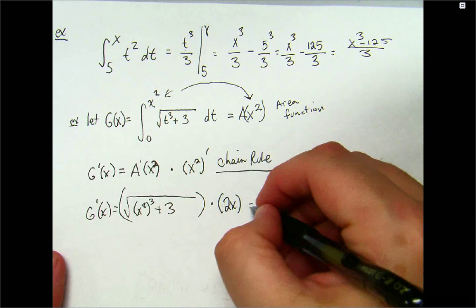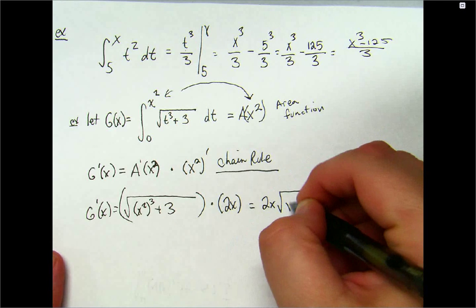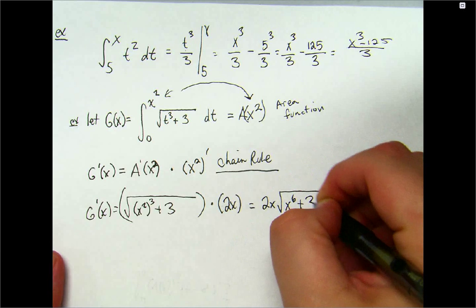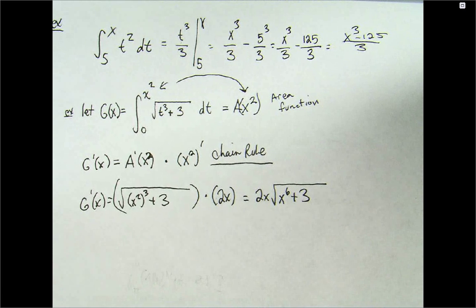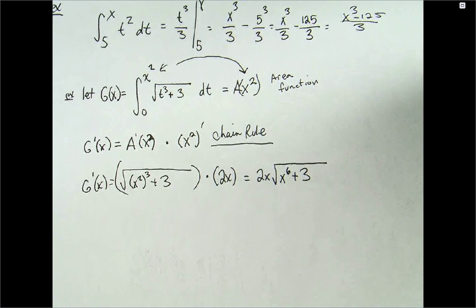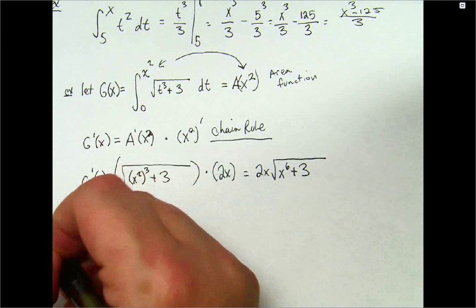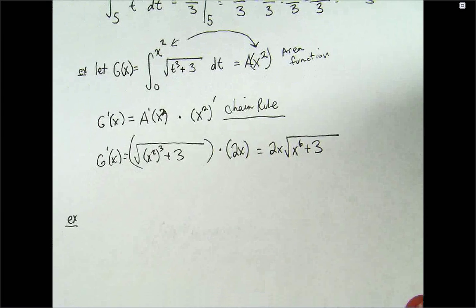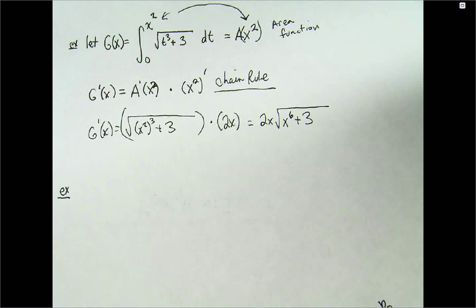2x. So, this is going to be equal to 2x times the square root of x to the sixth plus three.